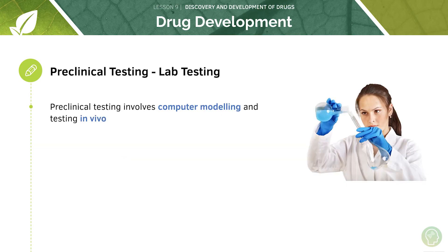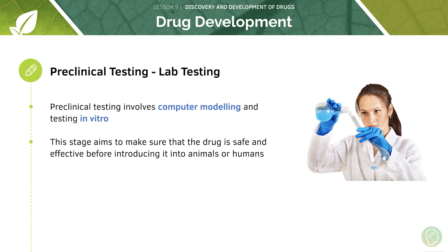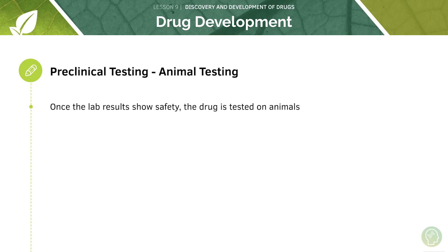First, we have preclinical testing, which is testing done within the lab. This testing does not involve humans or animals — it starts off with computer modelling and also testing in vitro, meaning outside of the body in a test tube. This stage aims to make sure that the drug is safe and effective before subsequently introducing it into animals or humans. Once computer modelling and in vitro testing shows the drug is safe, it is then tested on animals.